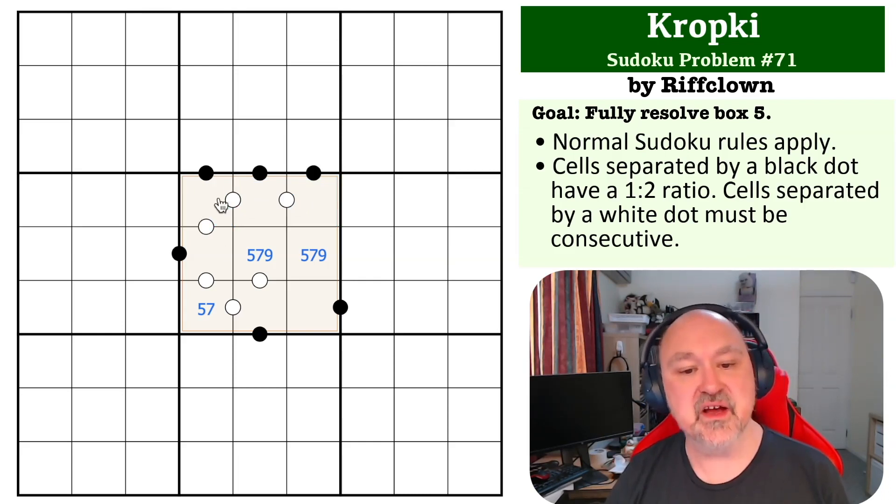Now if this is a nine, this would go eight, seven, six, five, and I've put a five on a black dot, which doesn't work. So this can't be the nine.